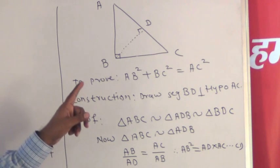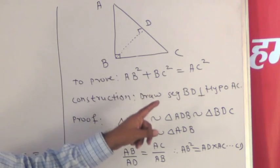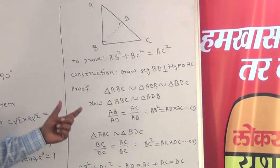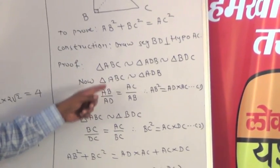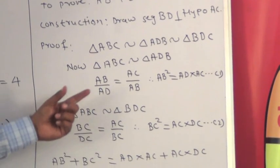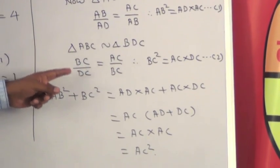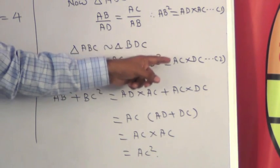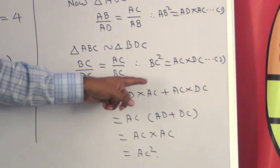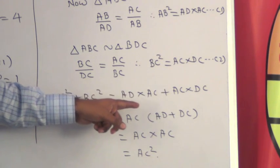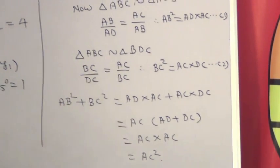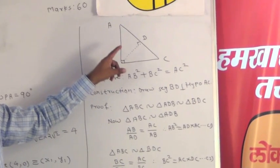By similarity in a right-angle triangle, triangle ABC is similar to triangle ADB, which is similar to triangle BDC. Taking triangles ABC and ADB, their corresponding sides are in proportion: AB upon AD equals AC upon AB, giving AB² equals AD·AC — equation 1. Similarly, from triangles ABC and BDC: BC upon DC equals AC upon BC, giving BC² equals AC·DC — equation 2. Adding both equations: AB² + BC² equals AD·AC + AC·DC equals AC(AD + DC) equals AC·AC equals AC². Thus the sum of squares of the other two sides equals the square of the hypotenuse.